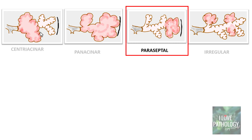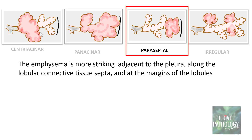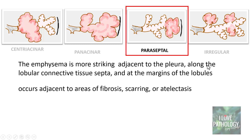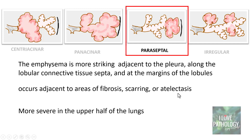Paraseptal emphysema is more striking adjacent to the pleura or septa. It is found along the lobular connective tissue septa and margins of the lobule. It usually occurs adjacent to areas of fibrosis, scarring, or atelectasis, and is more severe in the upper half of the lungs.